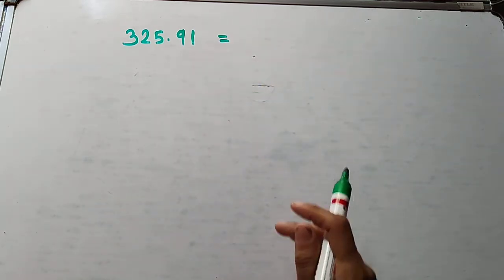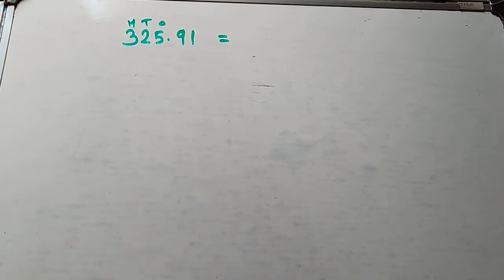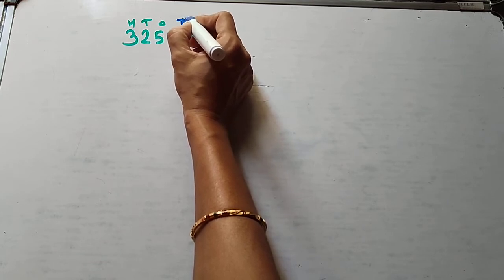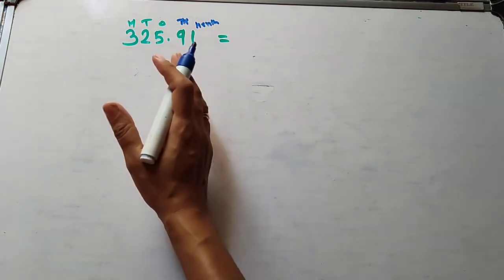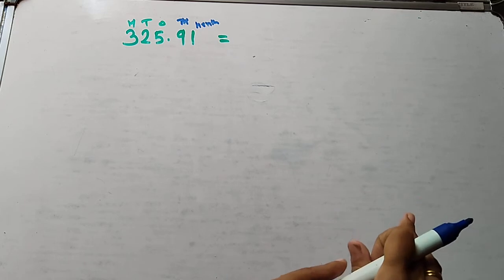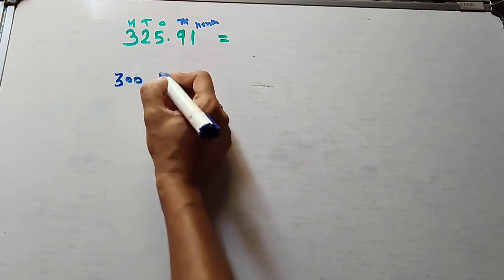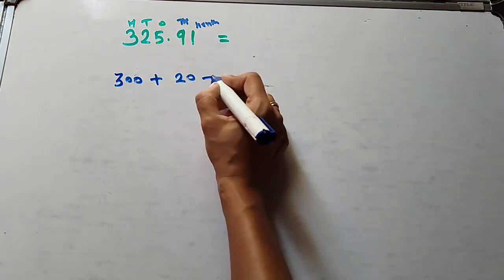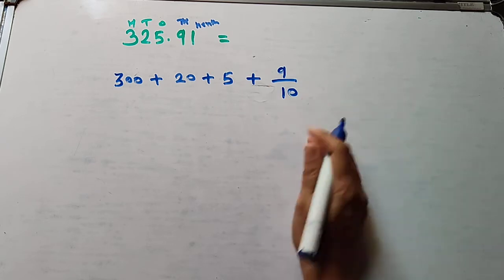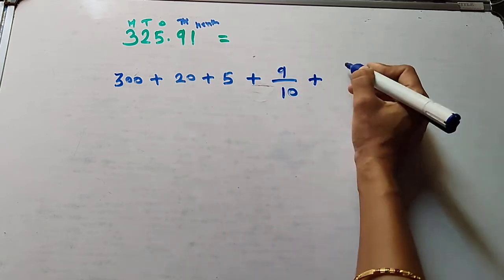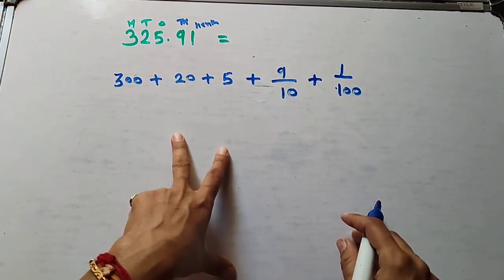How do we write this number in expanded form? After the decimal point, this is the ones place, tens place, hundreds place. After the decimal point, this is the tenths place, then the hundredths place, then the thousandths place. Moving right, the value of the number decreases. So: 3 is in the hundreds place means 300, plus 2 tens, plus 5 ones, plus 9 tenths, plus 1 hundredth. In this way we write the number in expanded form.